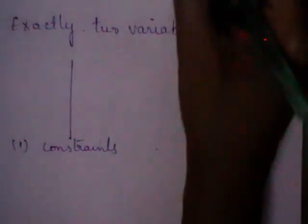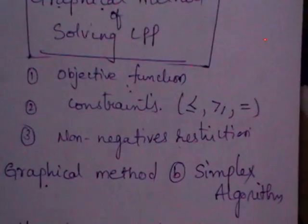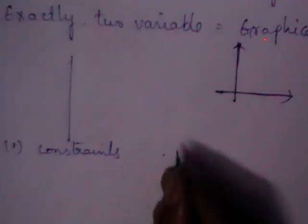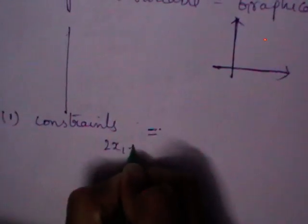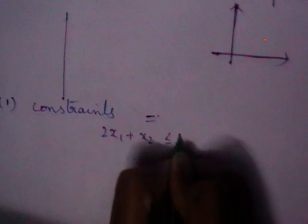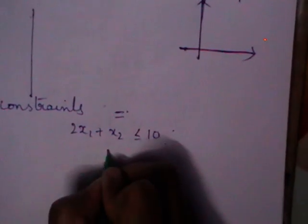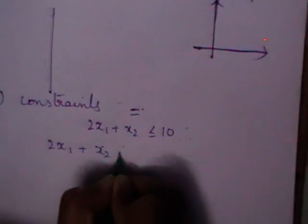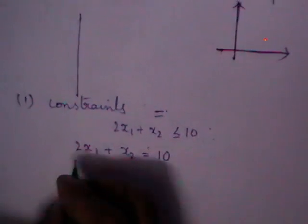The constraints can be of less than or equal to type, greater than or equal to type, or simply an equation. Whatever the type — whether less than, greater than, or equal to — first try to express each constraint as an equation.